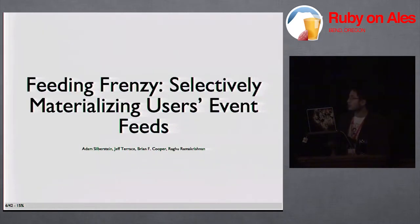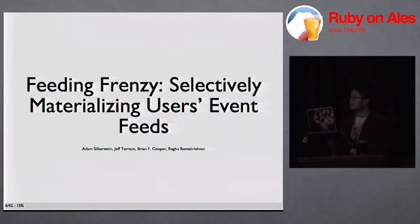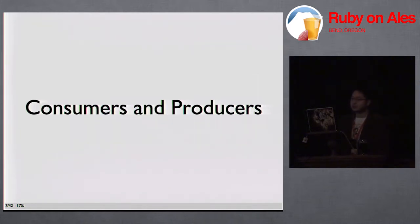There's this paper called 'Feeding Frenzy: Selectively Materializing Users' Event Feeds,' by some people at Yahoo Research. They go through how Yahoo stores their feeds — they have their Yahoo RSS thing where they have millions of people subscribing to millions of blogs and news sources. They go through and talk about how they do it at Yahoo, which is way larger in scale than GitHub, but there's a lot of good stuff in this paper and there's a link to it at the end.